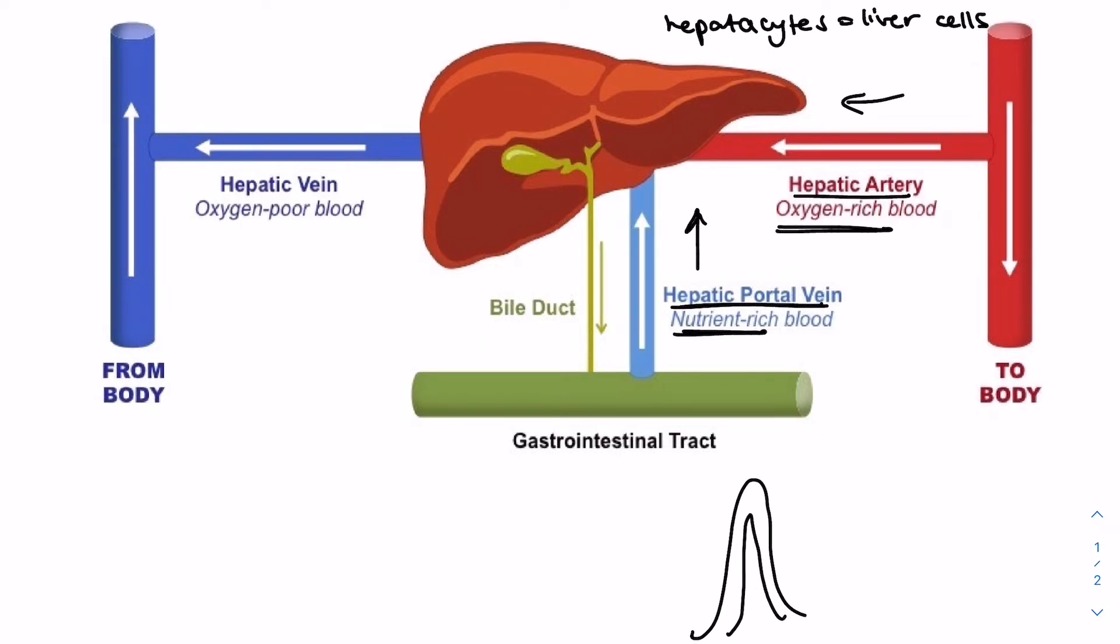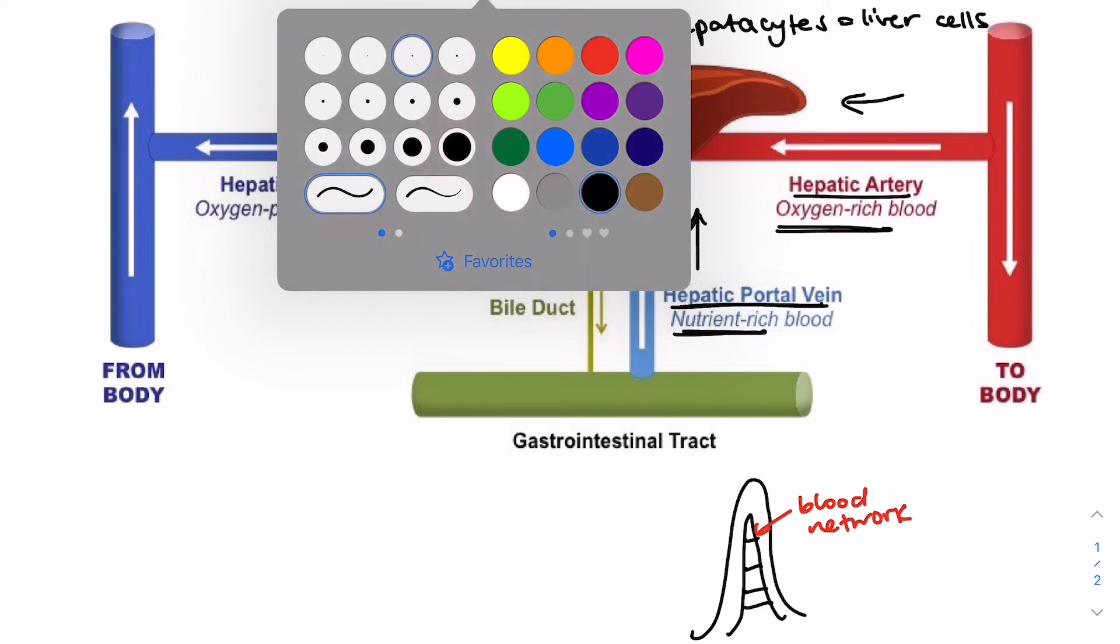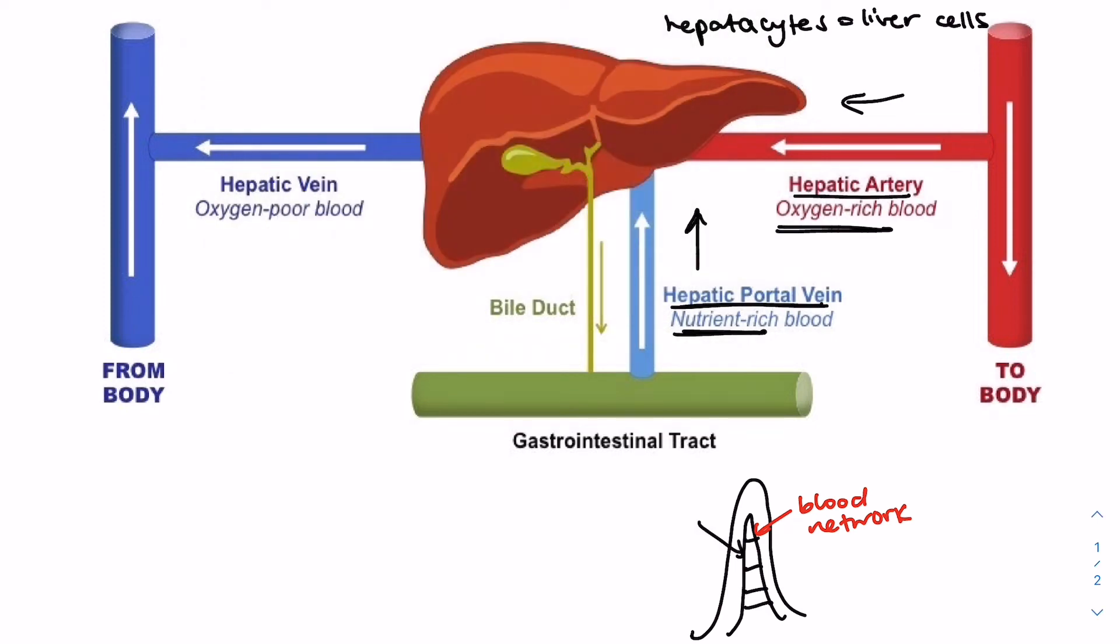So if we take a look at the villi, which is the finger-like projections on the surface of our small intestine, this would be our blood network. And nutrients actually diffuse in from the lumen, or not diffuse, they move in via various different methods of transportation. So that might be active transport, osmosis, endocytosis, depending on the type of nutrient, its polarity, its size, many other factors such as that.